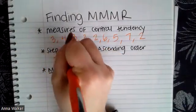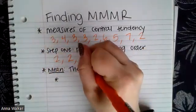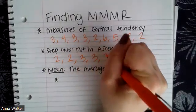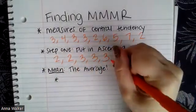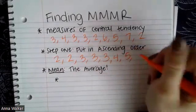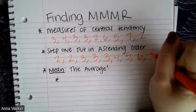If I was to put these numbers in ascending order, it would be 2, 2, 3, I have three 3s so I'm going to put that three times, 4, 5, 6, and 7.